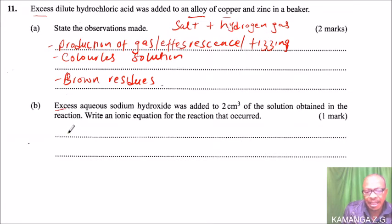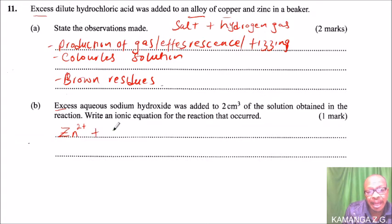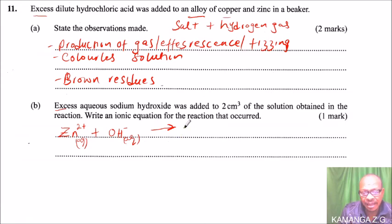Inside the solution obtained, we have zinc ions. These zinc ions will react with the hydroxide ions from the sodium hydroxide. This gives us the ionic equation: Zn²⁺(aq) + OH⁻(aq) → a colorless complex ion.